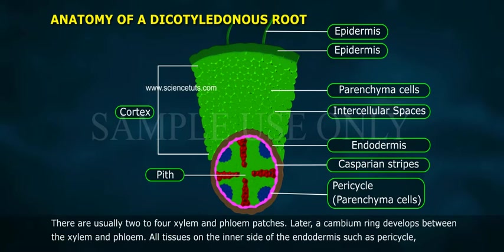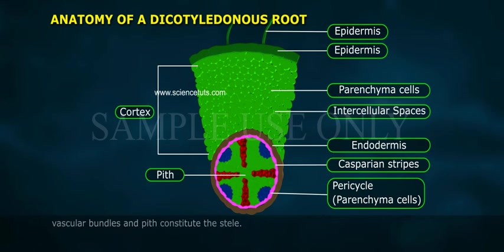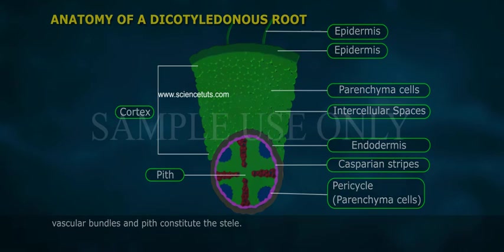Later, a cambium ring develops between the xylem and phloem. All tissues on the inner side of the endodermis, such as pericycle, vascular bundles, and pith, constitute the stele.